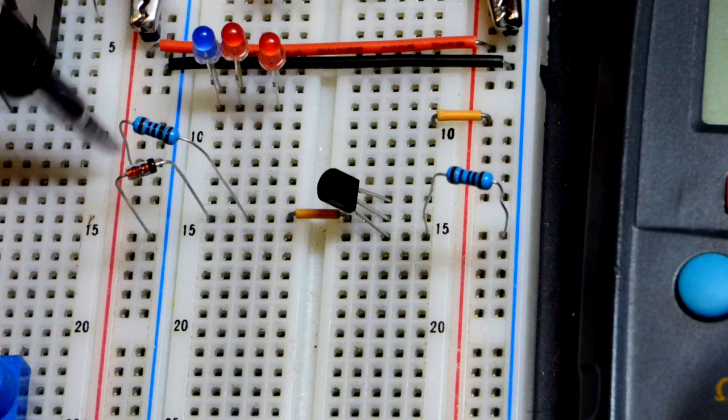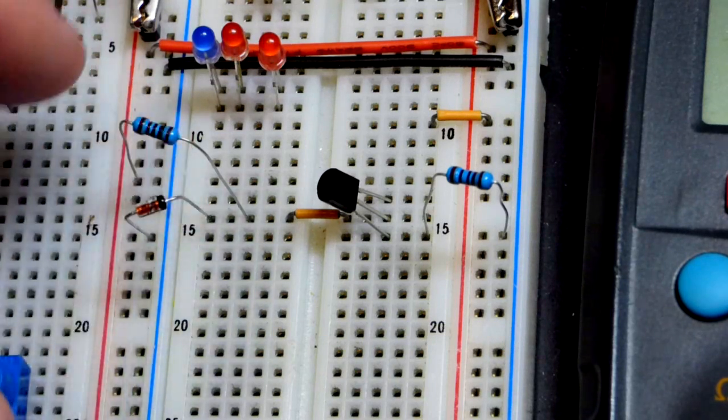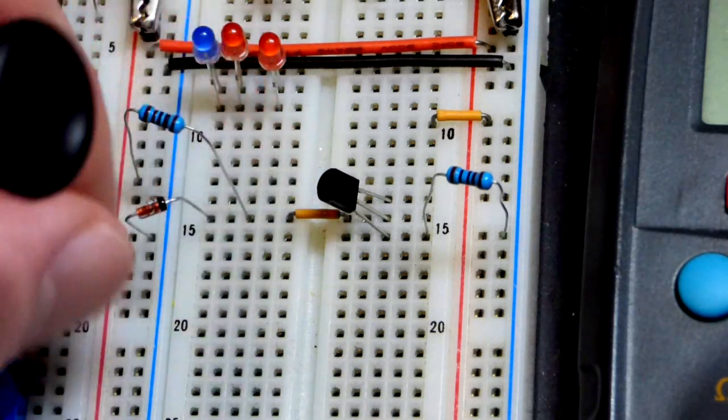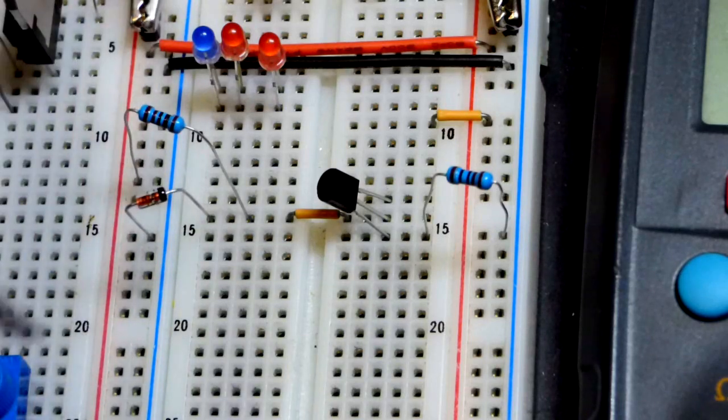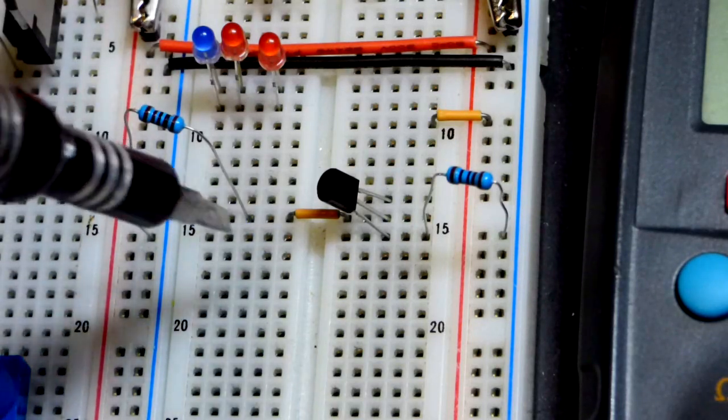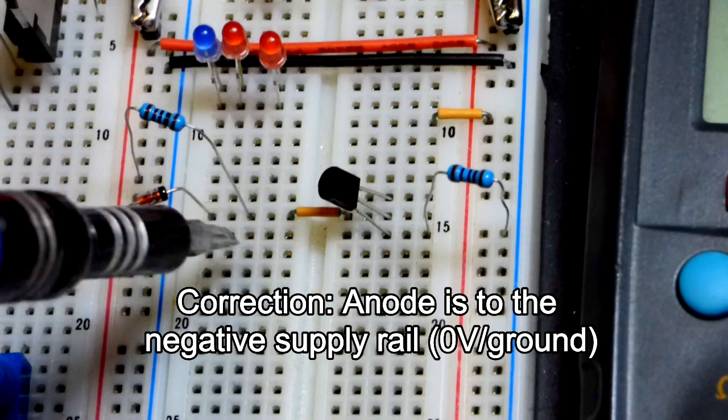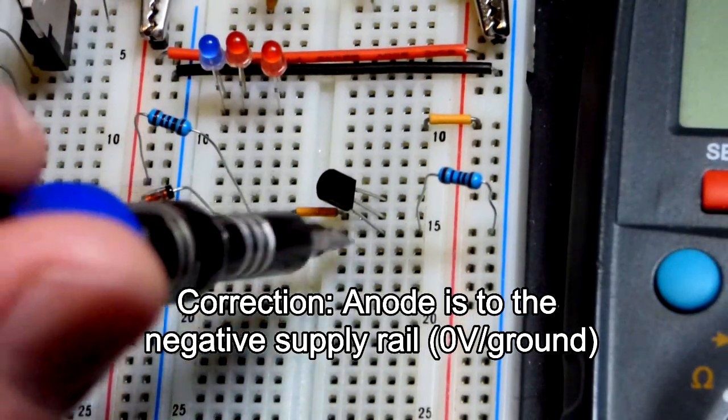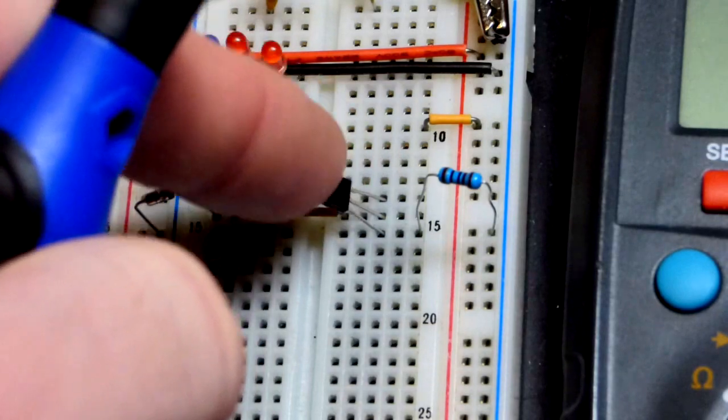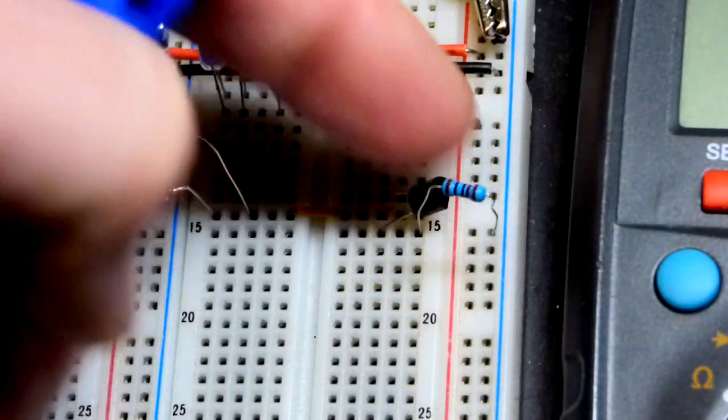So now here we have the circuit. There's a 1 kilohm resistor to the positive supply, comes to the Zener diode. This is a 5.6 volt Zener diode, cathode right there, anode over there to the positive side of the power supply. Cathode to the resistor, also to that jumper that goes to the middle pin, the base of the transistor.